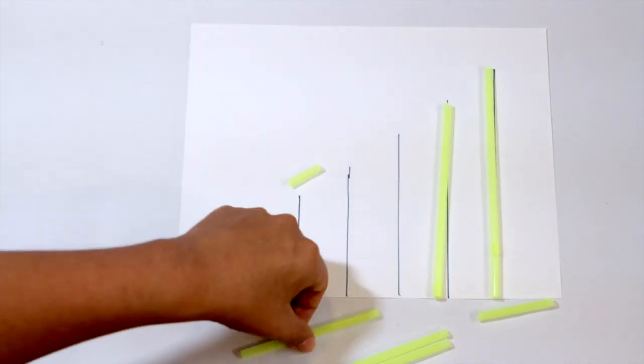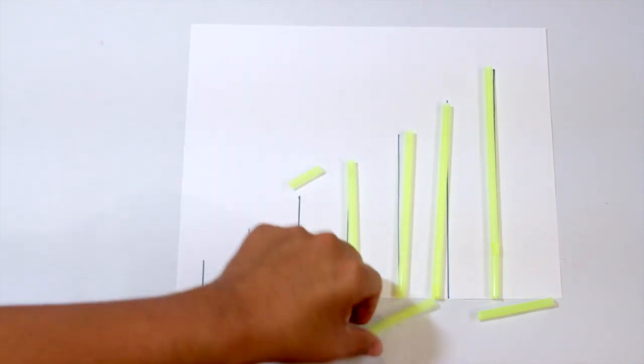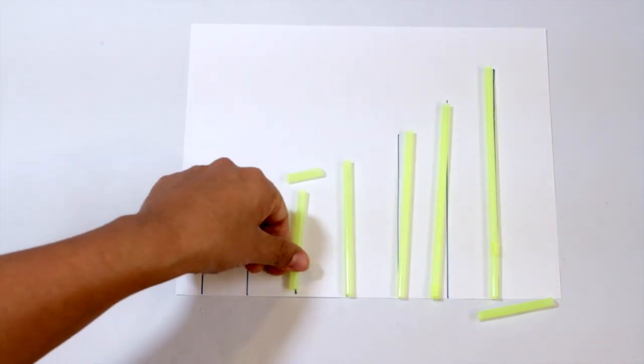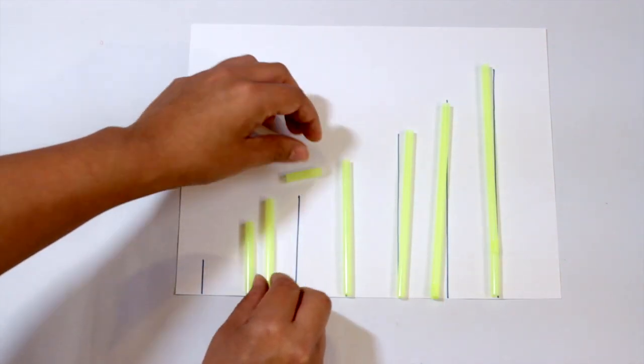This straw is smaller than this straw, or this straw is bigger than this straw, and have really good conversations about understanding big and small. Of course my straws are rolling right off the paper here.